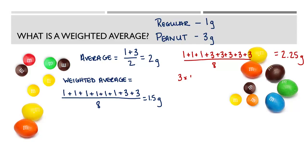Hopefully you're starting to see the difference between an arithmetic average and a weighted average. Another way to write this is: 3 times 1 (because there are 3 M&Ms with mass 1) plus 5 times 3 (because there are 5 M&Ms with mass 3), all over 8, which is our total number of M&Ms. We still get 2.25. That's a second way to represent this weighted mean.